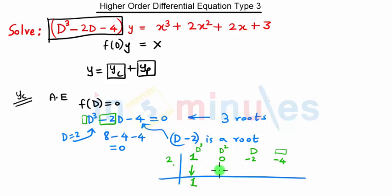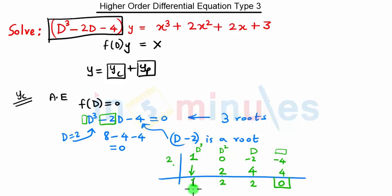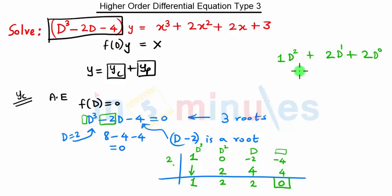We take 1 as it is. 2×1 = 2, and 0 + 2 = 2. Then 2×2 = 4, and -2 + 4 = 2. Then 2×2 = 4, and -4 + 4 = 0, so the remainder is 0. The coefficients are 1, 2, 2, giving us the new equation D² + 2D + 2 = 0.